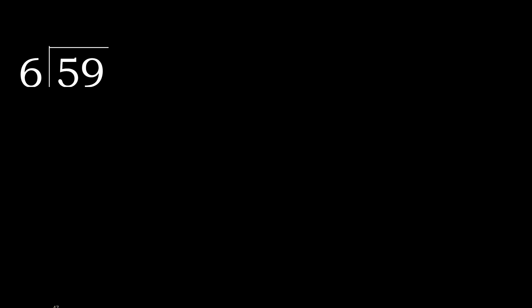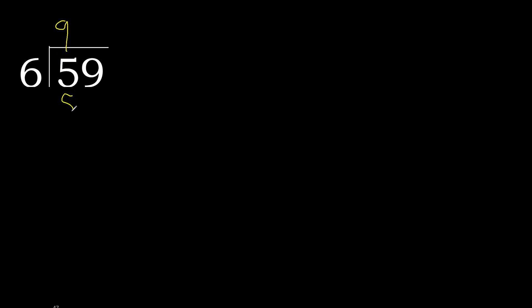59 divided by 6. 5 is less, therefore next. 59 is not less, therefore with 59. 6 multiplied by which number is nearest to 59 but not greater? 6 multiplied by 9 is 54, which is not greater. 59 minus 54 is 5.